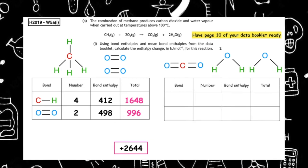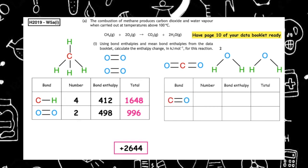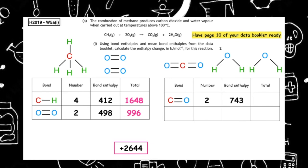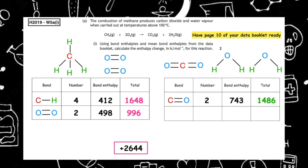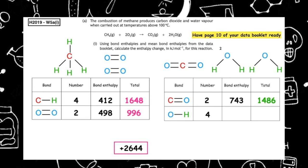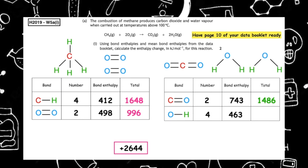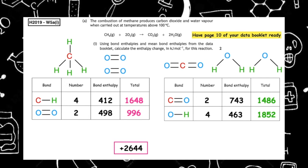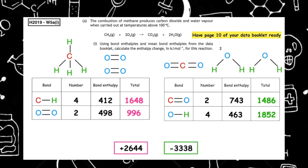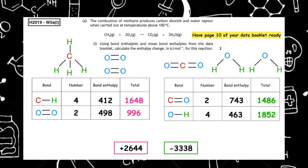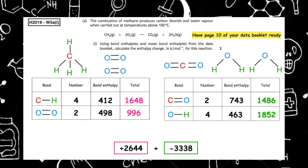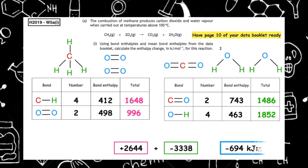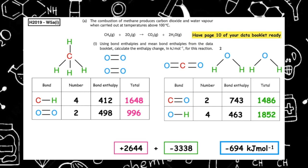On the product side there is a C=O double bond — 2 of those — with a mean bond enthalpy of 743: 2 × 743 = 1486. There are also 4 O–H single bonds with a mean bond enthalpy of 463: 4 × 463 = 1852. Adding these gives 3338, which must be negative as it is an exothermic reaction. So 2644 + (−3338) gives a total enthalpy change of −694 kJ mol⁻¹.